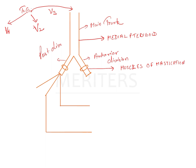Then you have the posterior division. Now this posterior division we have to remember by the mnemonic AIL — A, I, and L. A stands for the auriculotemporal nerve. So from the posterior division, one nerve will be there that is the auriculotemporal nerve. Then I is going to be your inferior alveolar nerve.